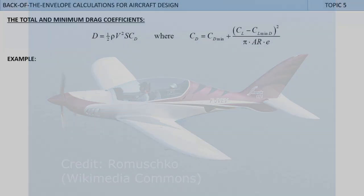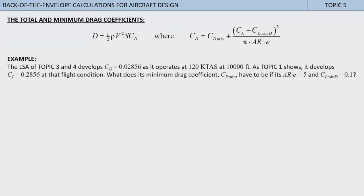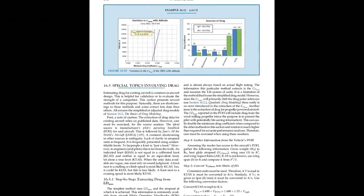Here is an example of how extracting a CDmin works. The LSA of topics 3 and 4 develops a CD equal to 0.02856 as it operates at 120 kTAS at 10,000 feet. As topic 1 shows, it develops a lift coefficient of 0.2856 at that flight condition. What does its minimum drag coefficient CDmin have to be if its aspect ratio times e equals 5, and CLminD equals 0.1? Using the above equations, we solve it for CDmin and then plug and chug to find that the required minimum drag coefficient is 0.02637. See more methods in section 16.5 of my book.